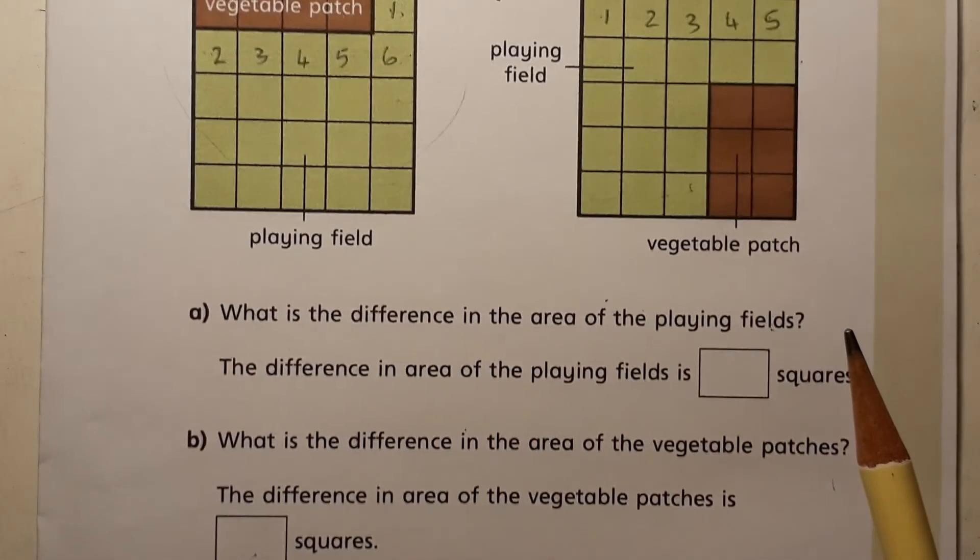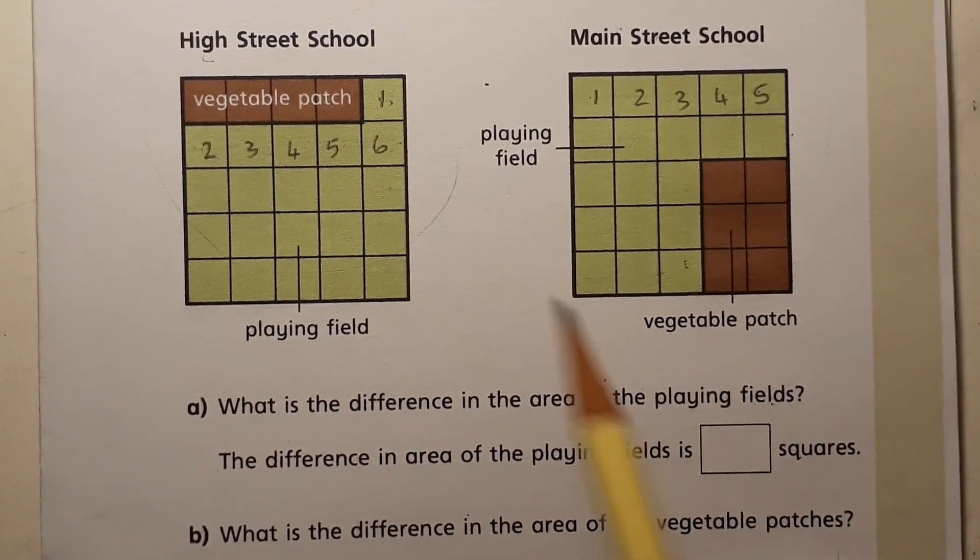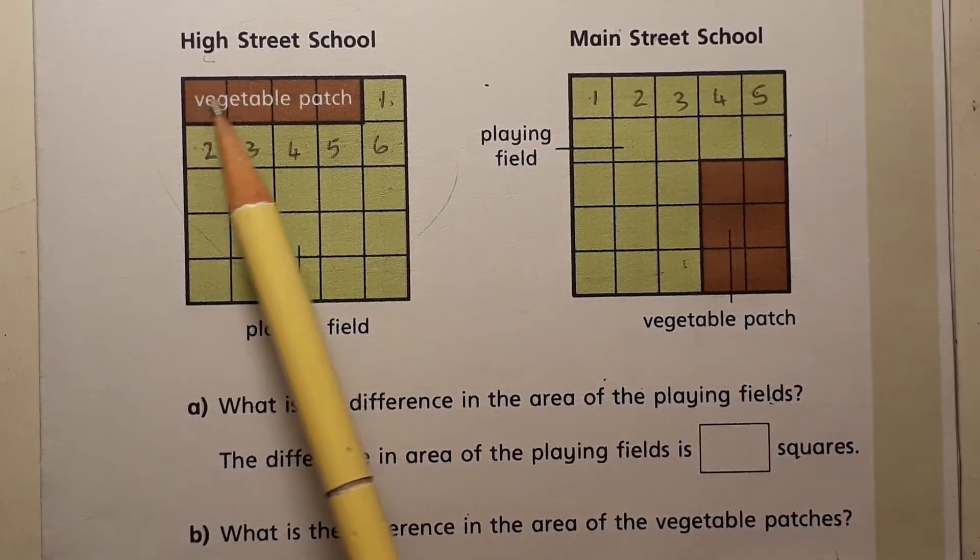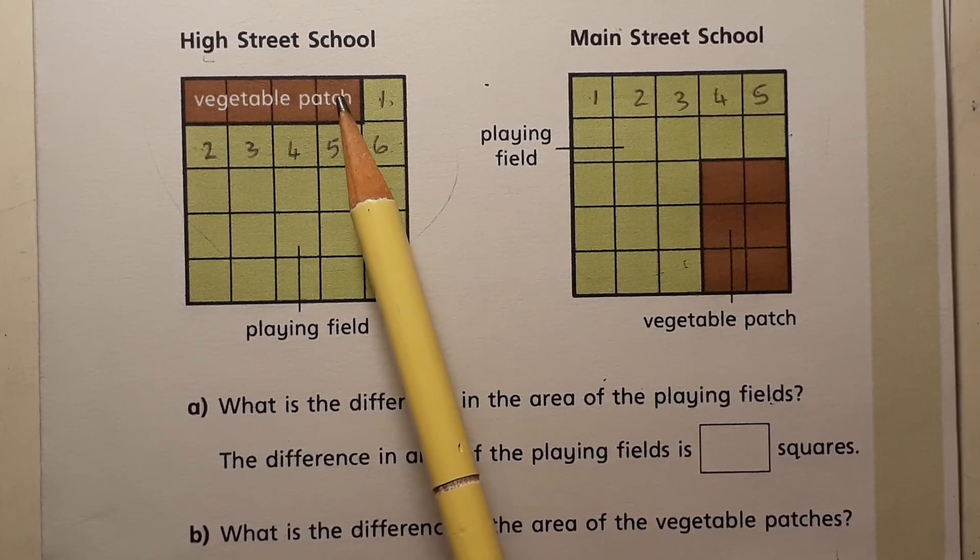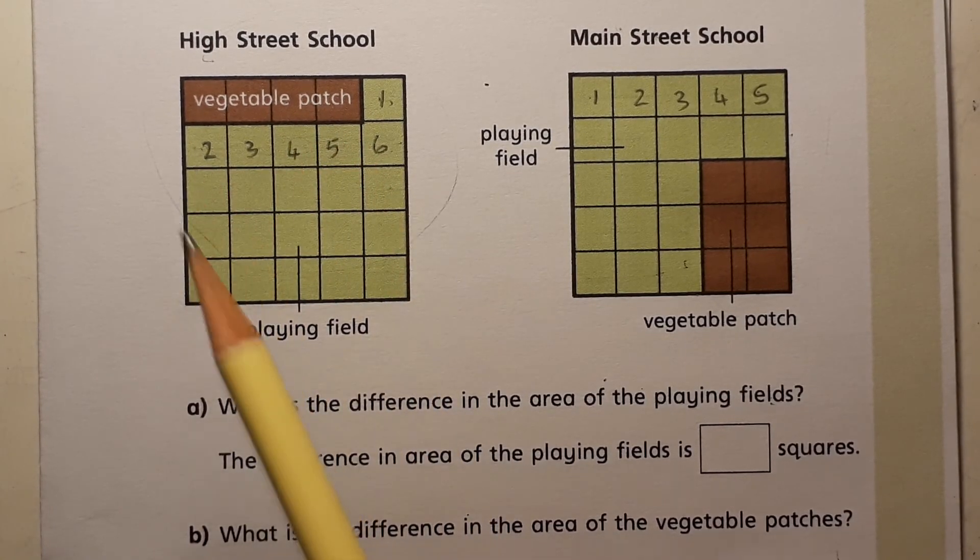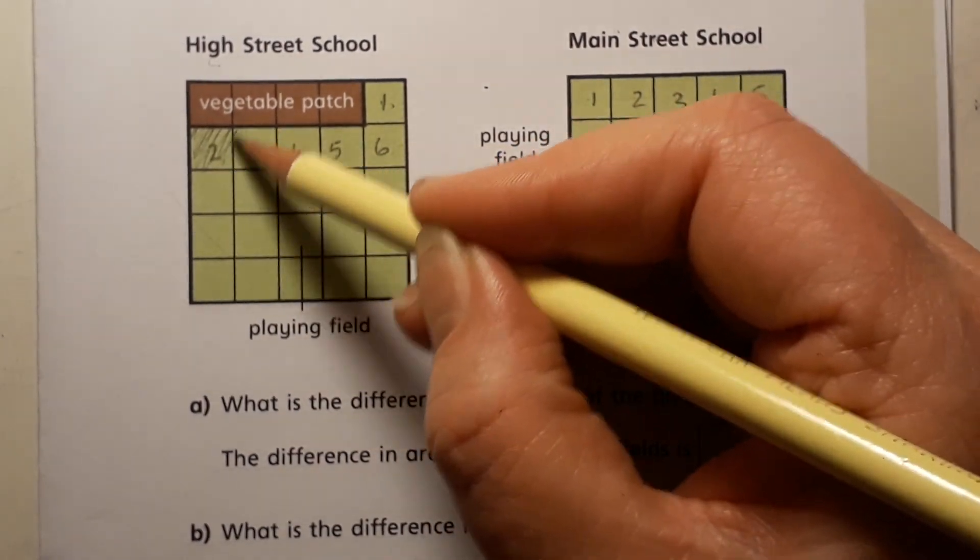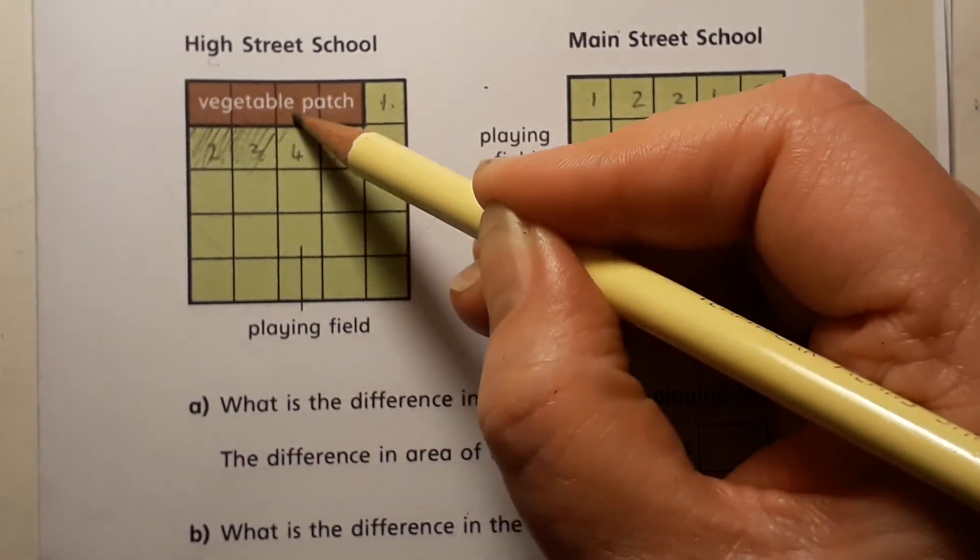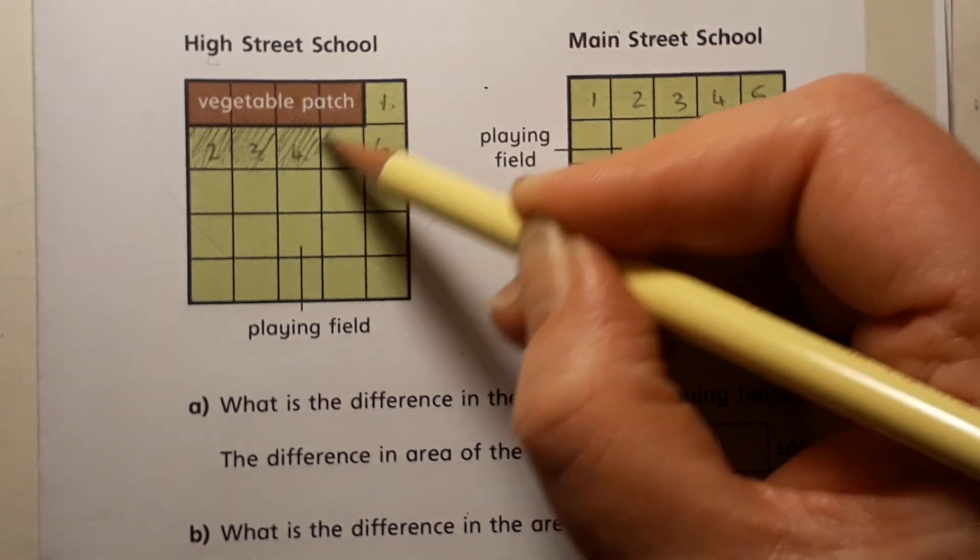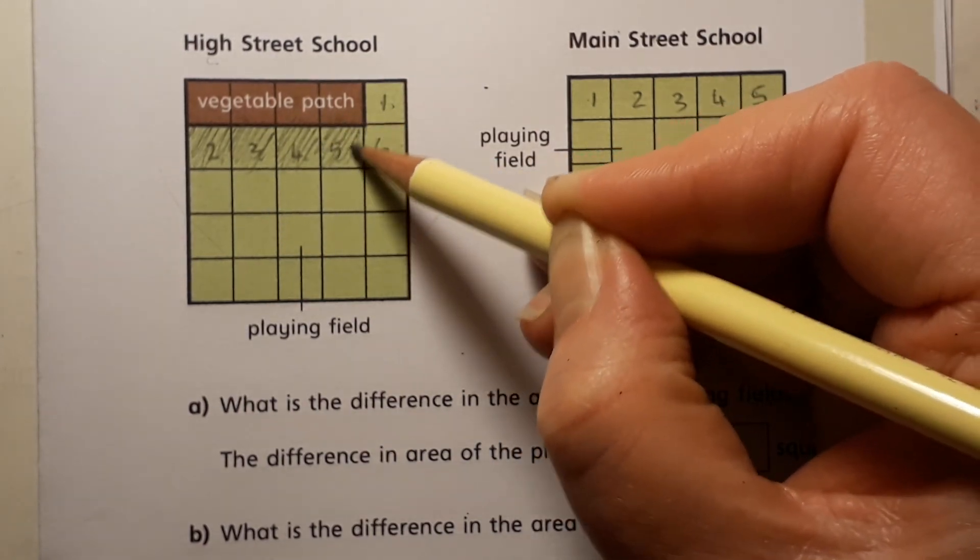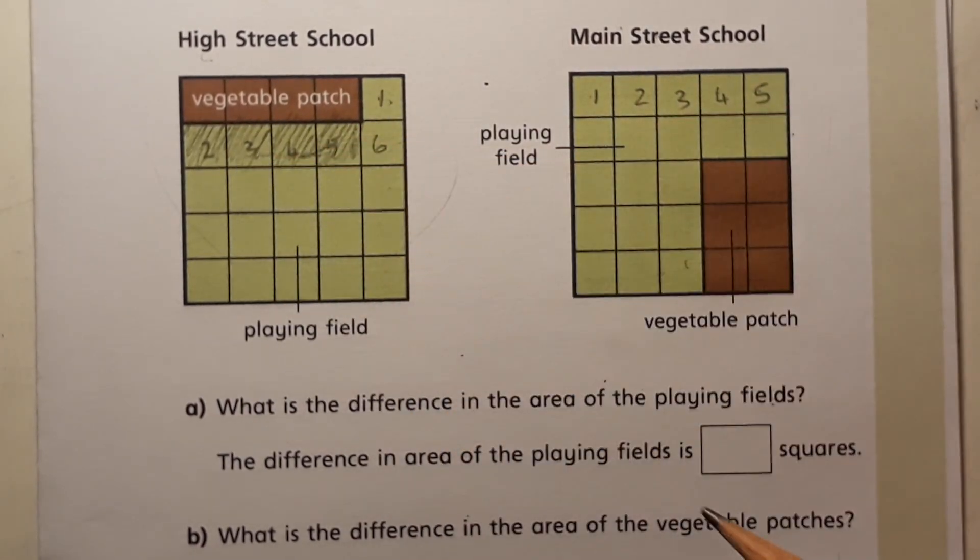So if we go up here, you might want to think, well at the moment it's one, two, three, four squares. So if each square is doubled, you might choose to get a brown pencil and show how that works.